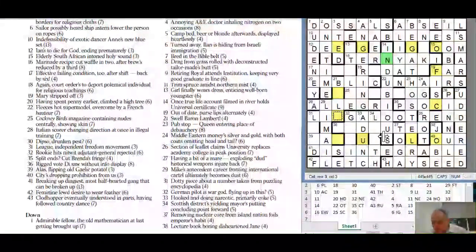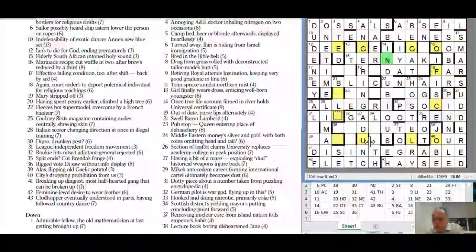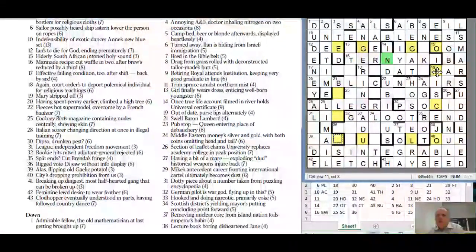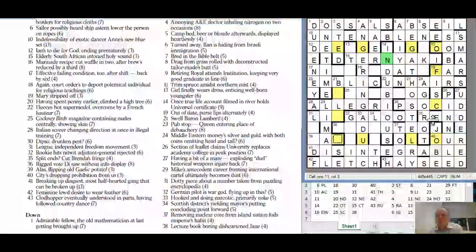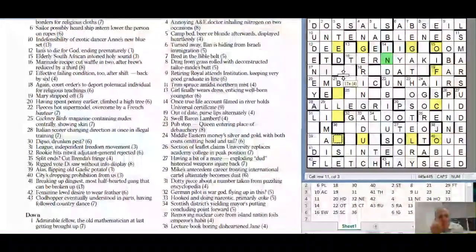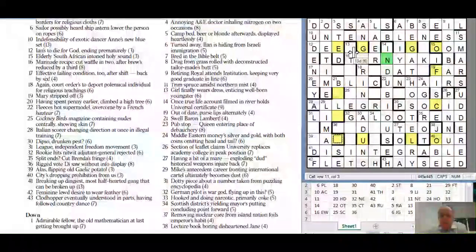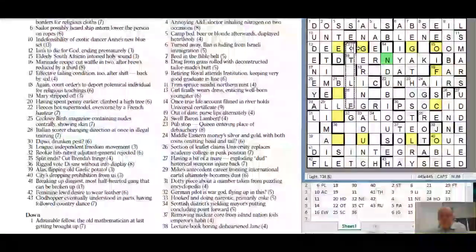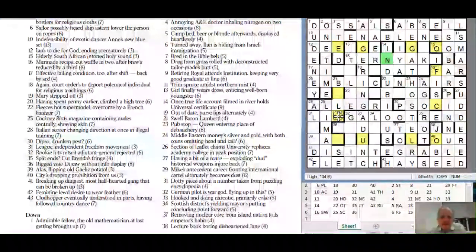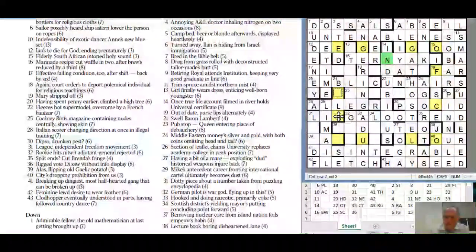Twenty one down: swell baron lambert - I don't know the word for swell. These two letters are going to be the extra letters so let's put them in yellow. That could be fog, big of, column egg of. They do seem to spell something out. League independent freedom movement - lib could be a freedom movement. Swell could be bulb.